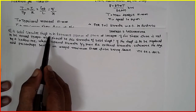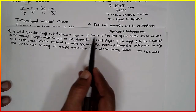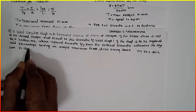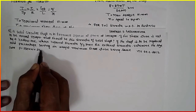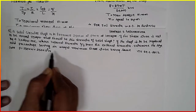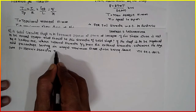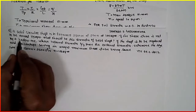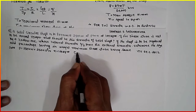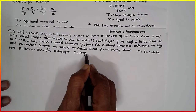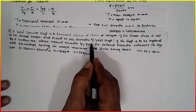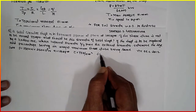A solid circular shaft is to transmit 550 kW power at 100 rpm. The data is: P = 550 kW = 550 × 10³ Watt, N = 100 rpm. If the shear stress is not to exceed 75 MPa — that is τ = 75 N/mm² since 1 MPa equals 1 N/mm² — we need to find the diameter of the solid shaft.